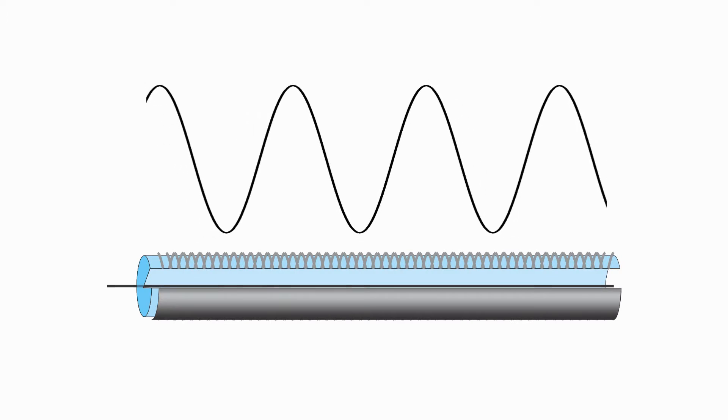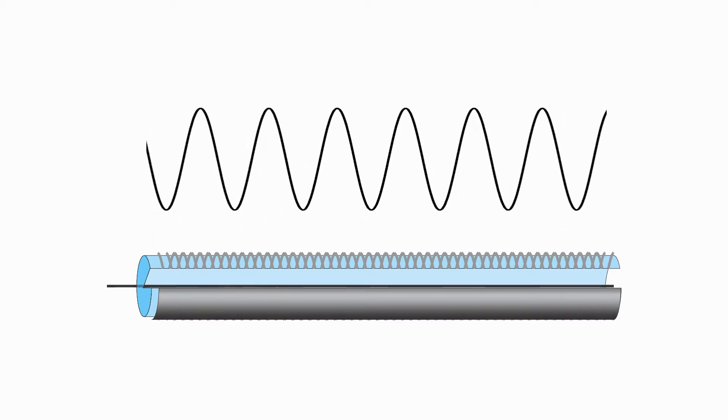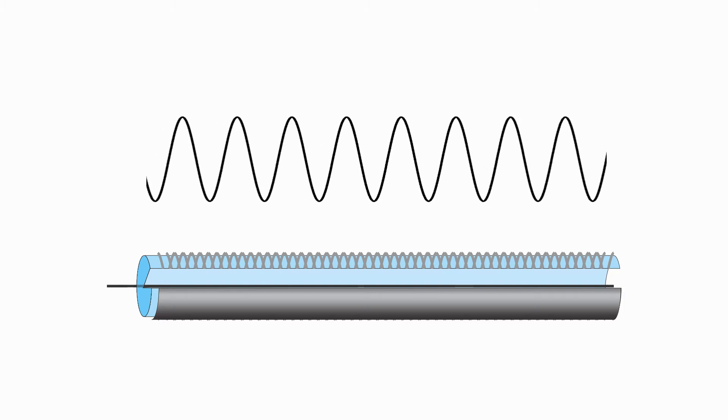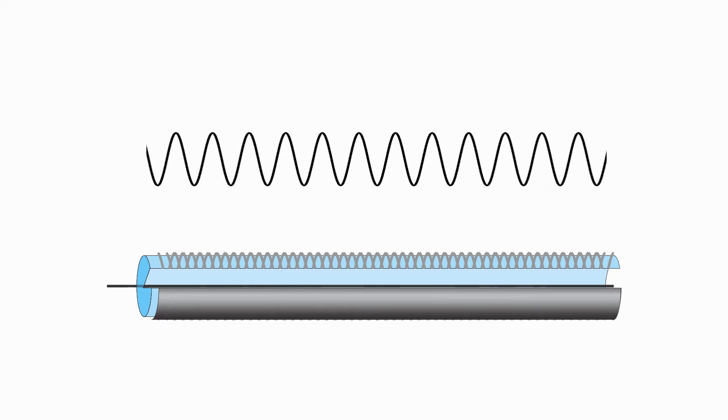We talked briefly before about coax cable and how it is used to transmit radio frequency signals. The coax cable has a characteristic that it attenuates some frequencies more than others.